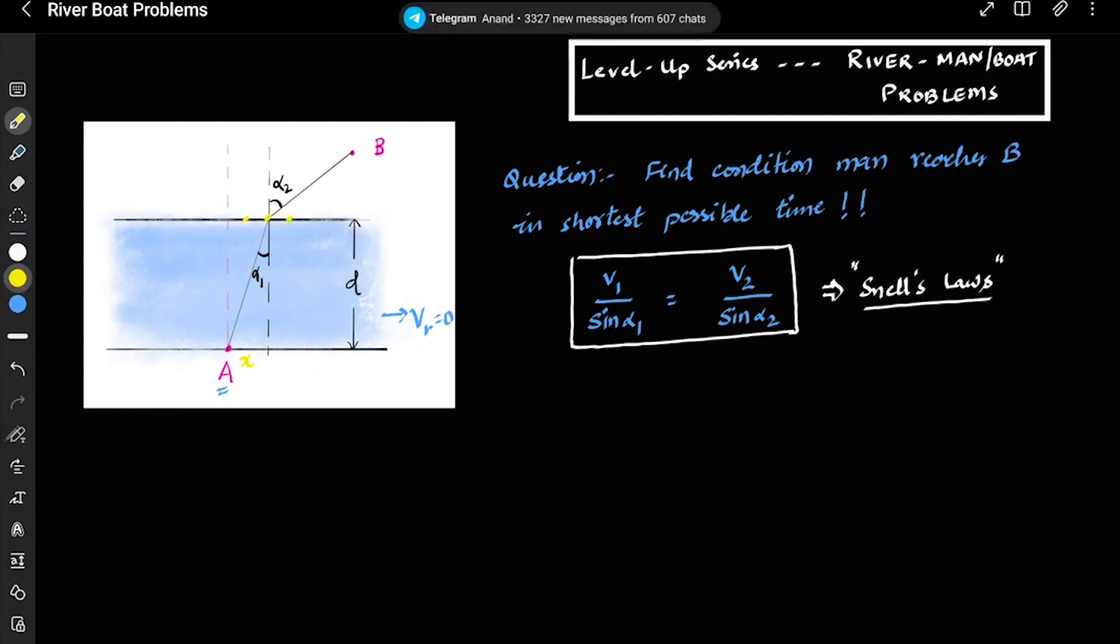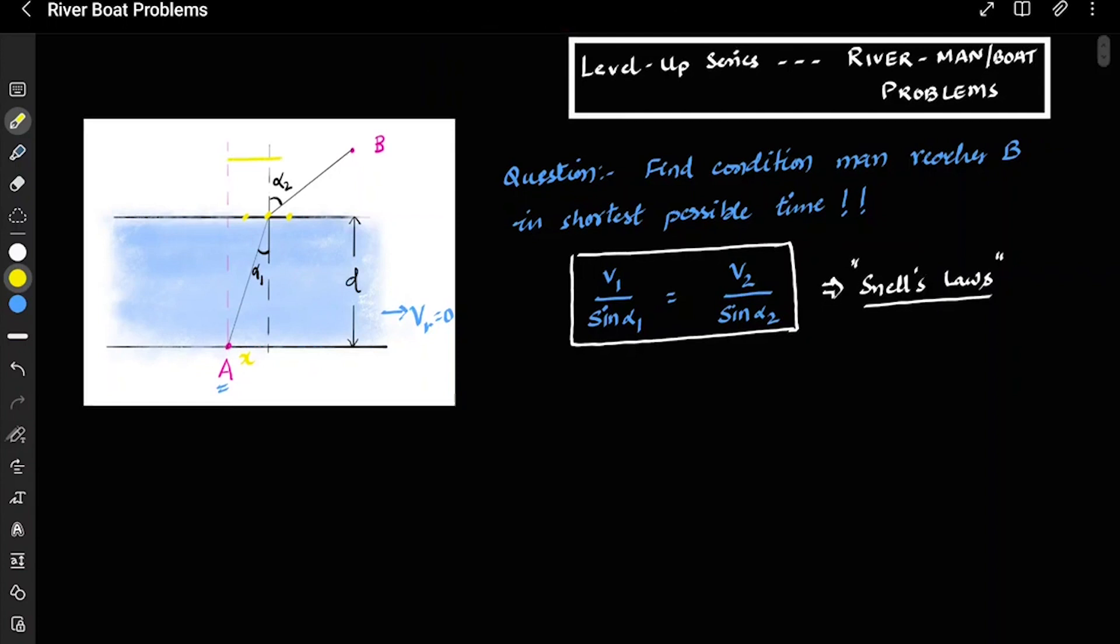You can clearly see the variable. Variable is this x because this position can change. It can be here, it can be here, anywhere. And then if this is x, let's say this is some length L, so it will be equal to L minus x. So what is constant?